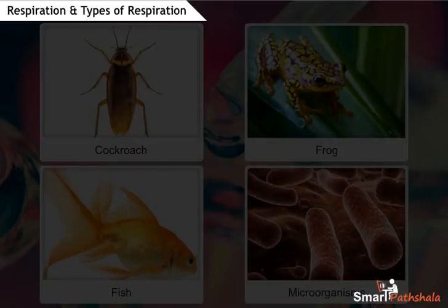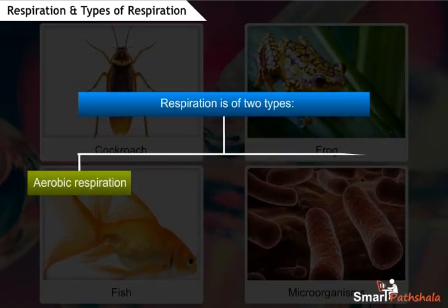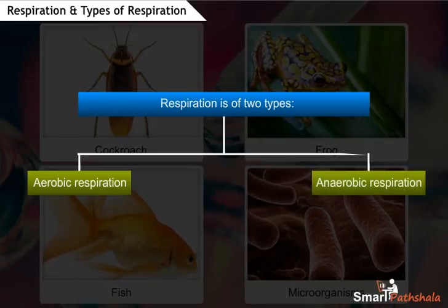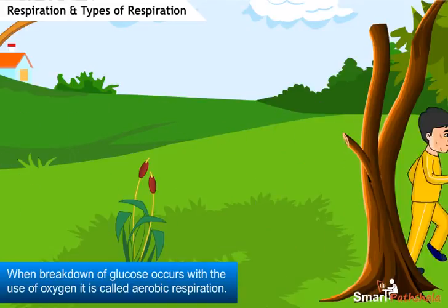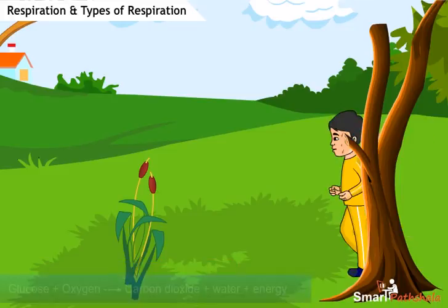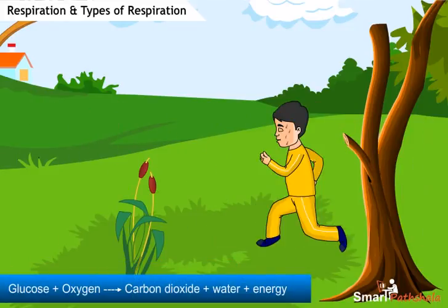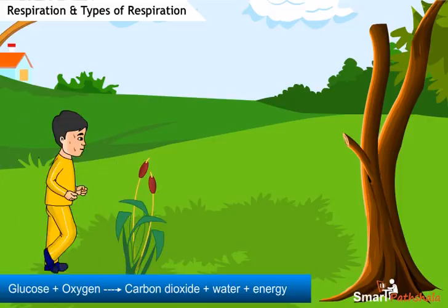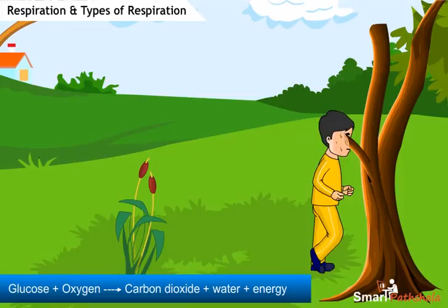Based on the oxygen requirement, respiration is of two types: aerobic respiration and anaerobic respiration. When breakdown of glucose occurs with the use of oxygen, it is called aerobic respiration. In aerobic respiration, glucose is broken down into carbon dioxide and water, and a greater amount of energy is released.